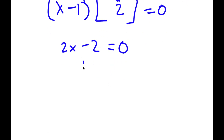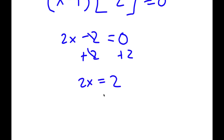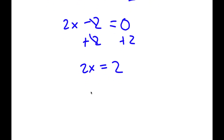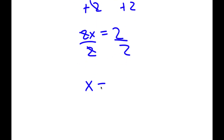To solve this, I add 2 to both sides — these cancel out — and I have 2x equals 2. Then I divide both sides by 2, these cancel out, and I am left with x equals 2 divided by 2, which is 1. So this is my answer.